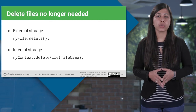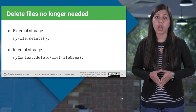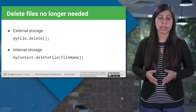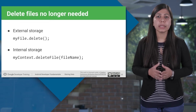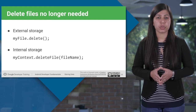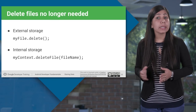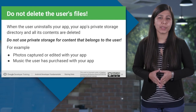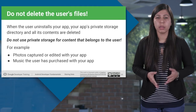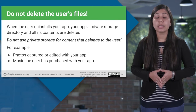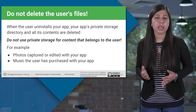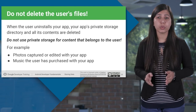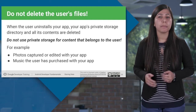Sometimes you need to free up space by removing extra files from internal or external storage. To do that, get the file and call delete() to delete files from external storage, and call deleteFile() to delete files from internal storage. You don't need to delete user files like images or music they may have purchased from some apps. The app's private storage directory and all its content are deleted when the user uninstalls the app, so do not use the private storage directory for content that belongs to the user.